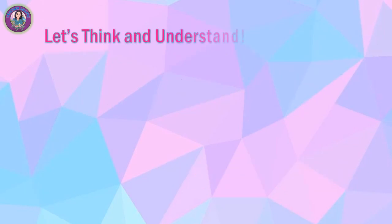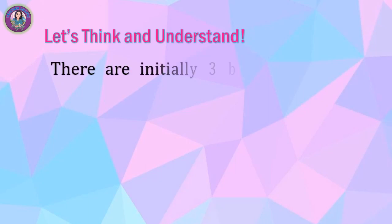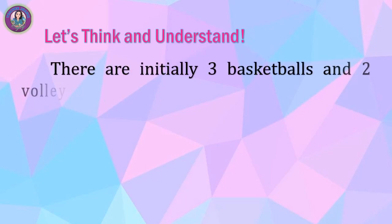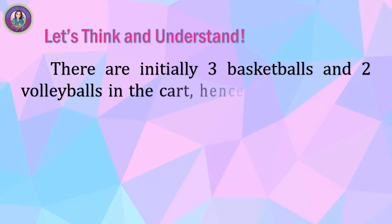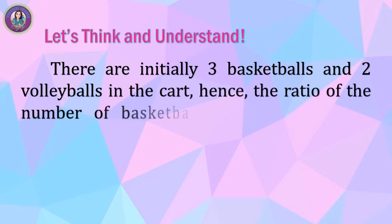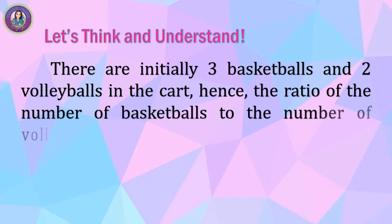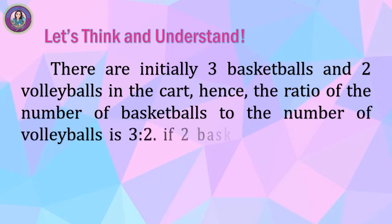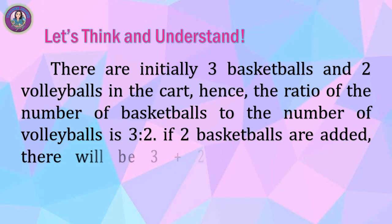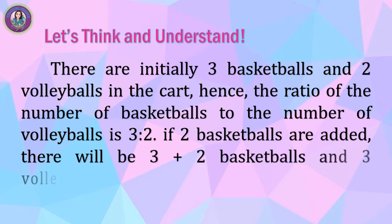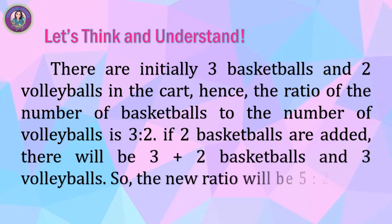Let's think and understand. There are initially three basketballs and two volleyballs in the cart, hence the ratio of the number of basketballs to the number of volleyballs is 3 to 2. If two basketballs are added, there will be three plus two basketballs and two volleyballs, so the new ratio will be 5 to 2.